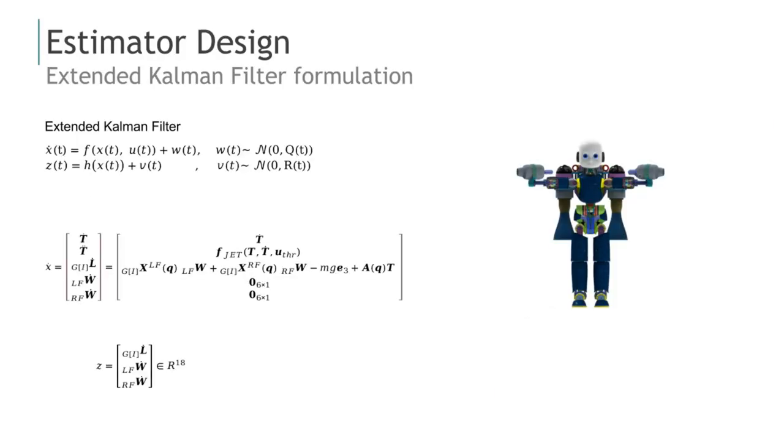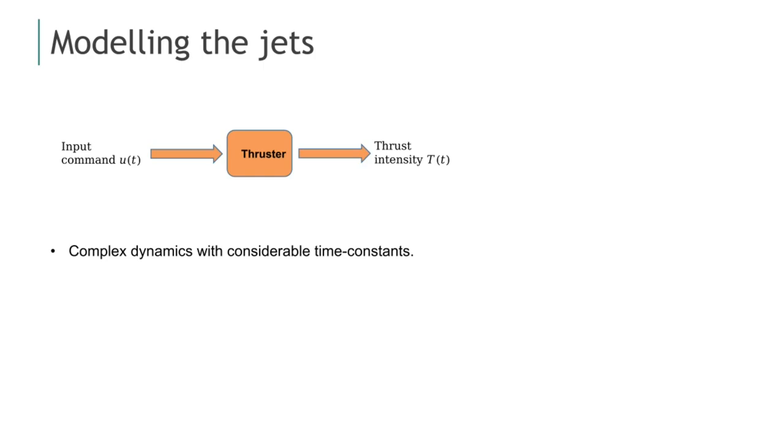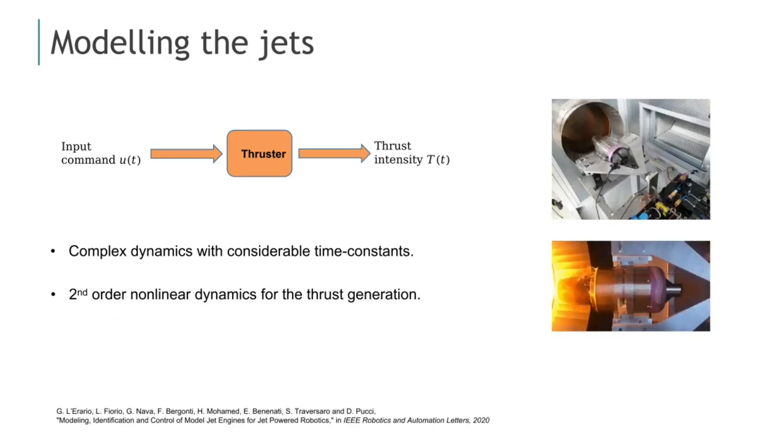We propose an extended Kalman filter that combines the jet's dynamics with the robot's centroidal momentum dynamics. The contact forces and torques are provided to the estimators as measurements from 6-axis force torque sensors mounted on the feet of the robot. Concerning the jet engines, it is necessary to take their dynamics into account since they are not negligible. We exploit our previous work where a second-order non-linear model was developed for small-scale jet engines.